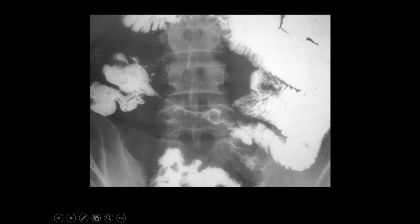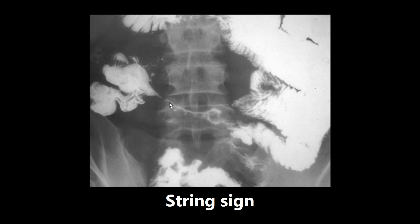This is an example of a string sign, which you would see on a barium study, and this is associated with Crohn's disease. You can see it right here — when you swallow the barium, it's not able to get all the way through. There are a lot of other associations with Crohn's disease, and there's a nice chart comparing Crohn's disease and ulcerative colitis in First Aid, so definitely take a look at that.